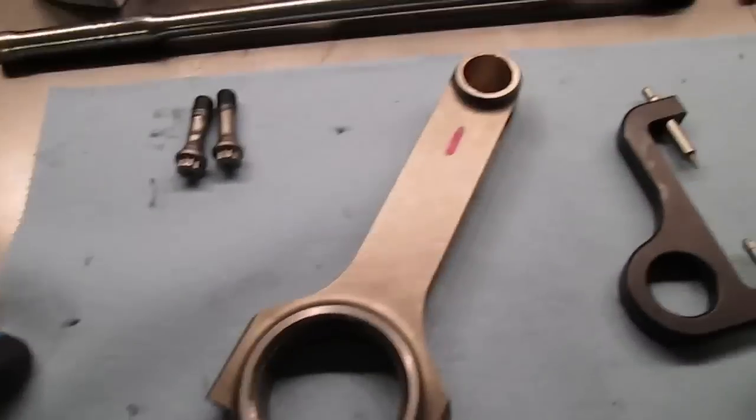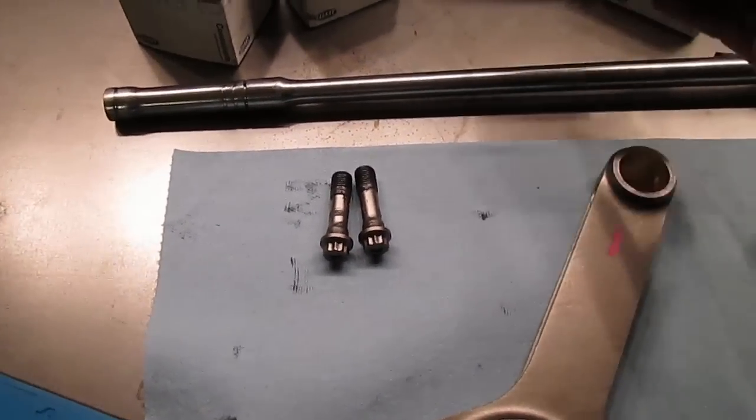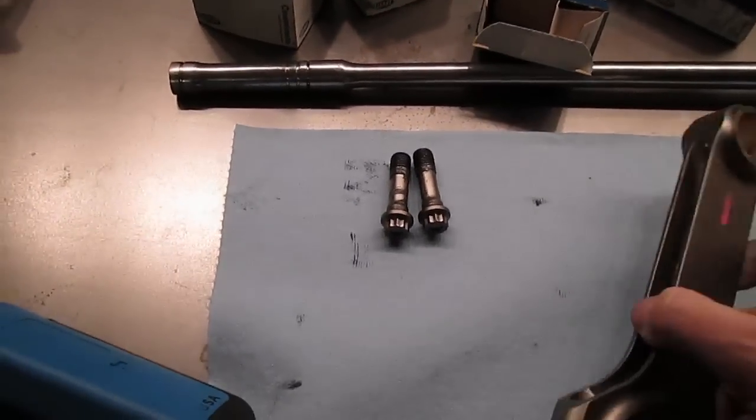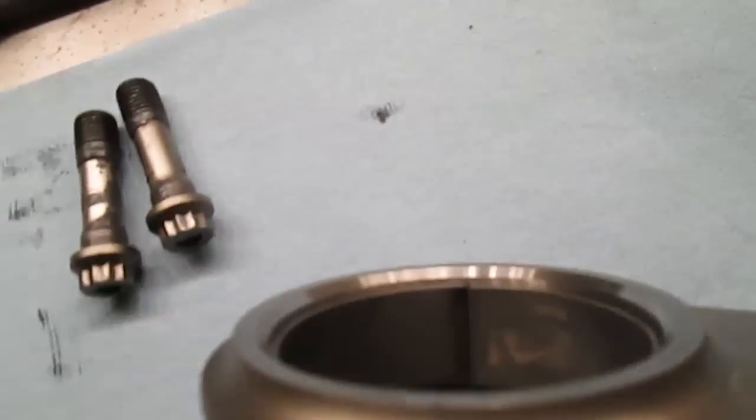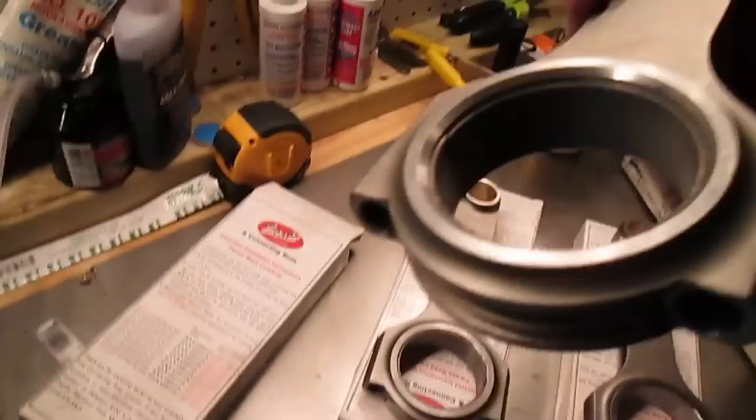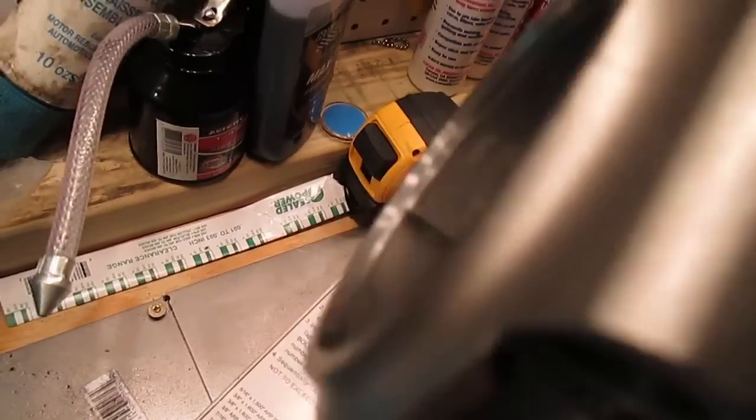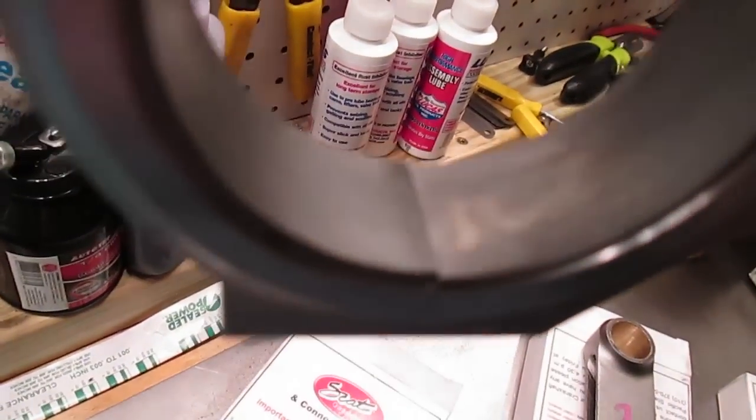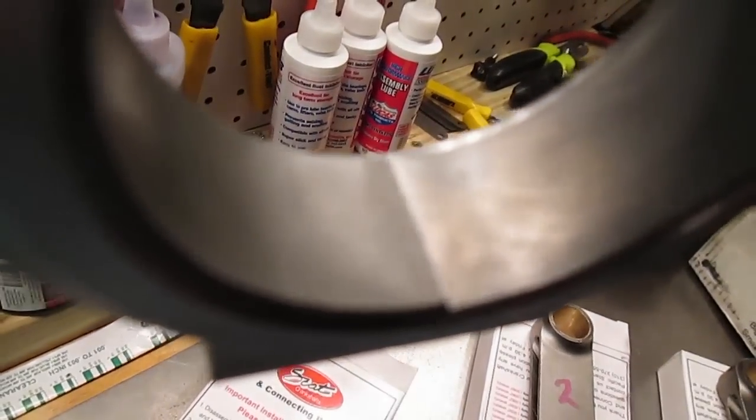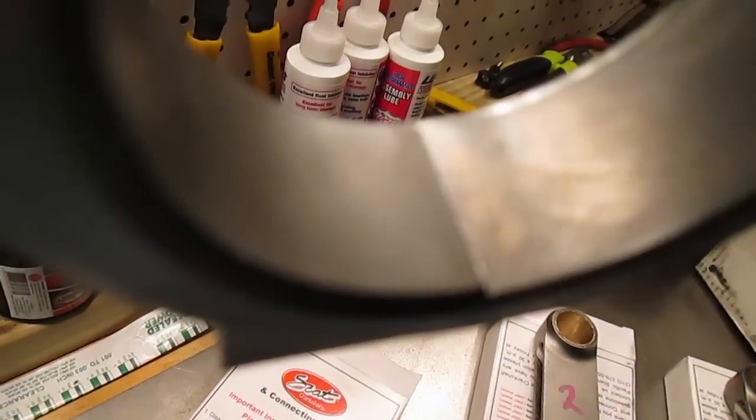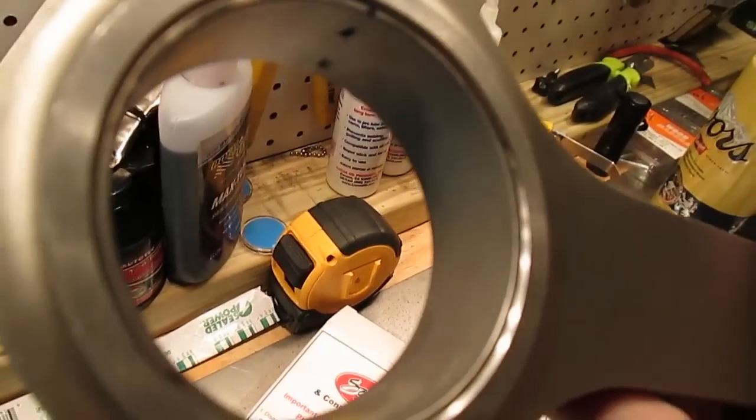But I came up with a couple of interesting things. So I'm using these Clavit rod bearings, and this set in rod number one - I don't know if we can see, let's get it in the light here - but this set does not line up in this rod at all. Can you see that?